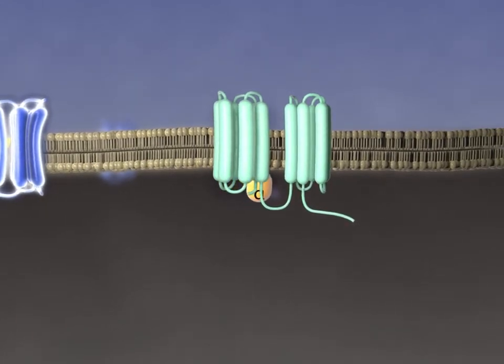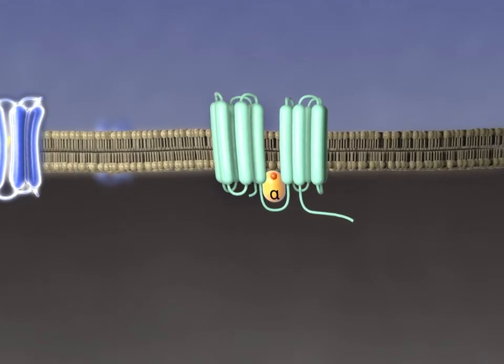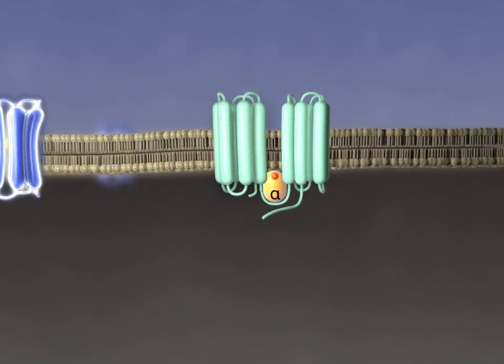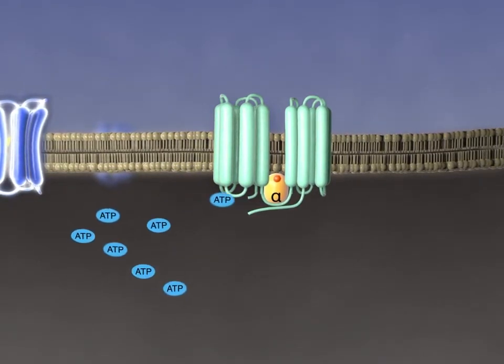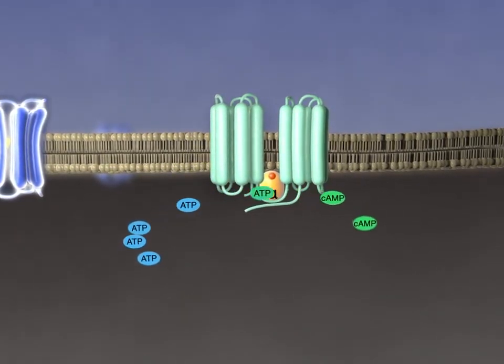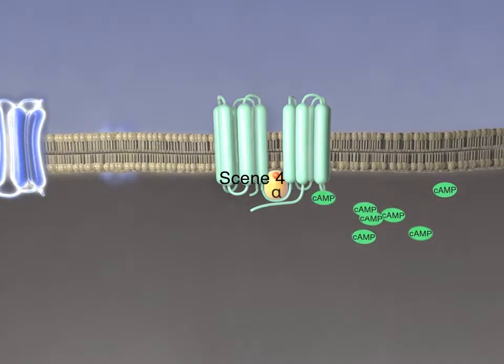When the G-S-alpha is activated, it binds to both catalytic domains and stabilizes their interaction, making an active enzyme that hydrolyzes lots of ATP to cyclic AMP in the cytoplasm.